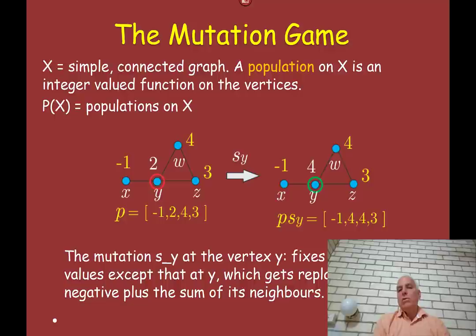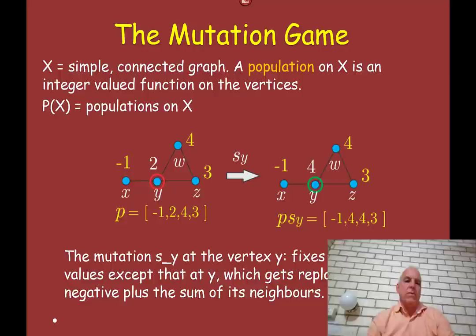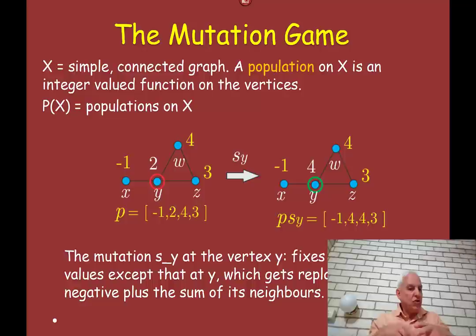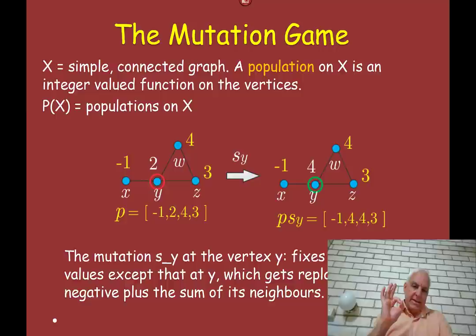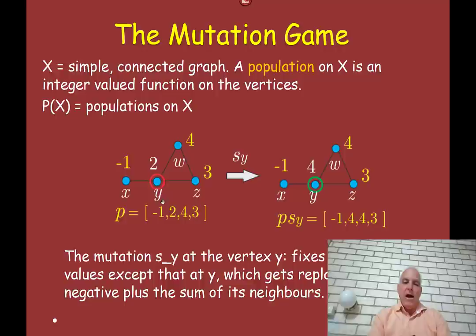I have a way of doing this called the mutation game — a kind of dynamical game on a graph — which turns out to be dual to a game previously introduced by Mozes called the numbers game. I'll tell you only about the mutation game in this introduction; during the course you'll learn also about the numbers game. Let's start with X, a simple connected graph — simple meaning at most one edge between any two vertices, edges are undirected, no loops. A population on X is an integer-valued function on the vertices: we assign integers to the vertices. Let P(X) be the populations on X.